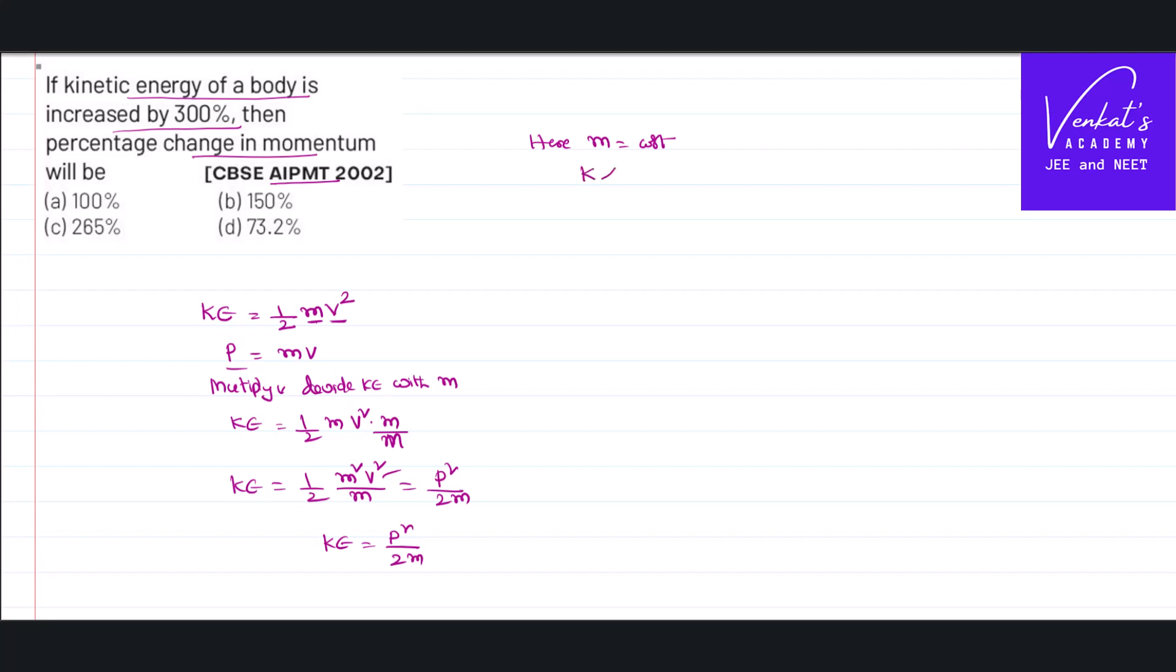The relation between kinetic energy and momentum is kinetic energy is directly proportional to P square, or momentum is directly proportional to square root of kinetic energy. So momentum 1 by momentum 2 is root of kinetic energy 1 by kinetic energy 2.